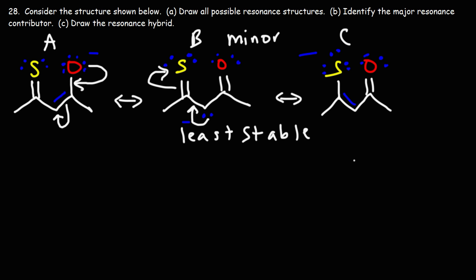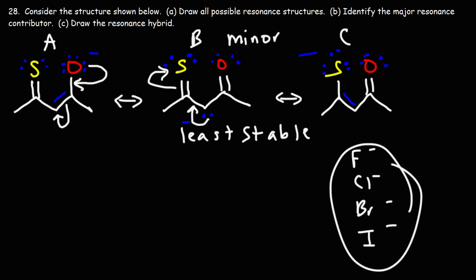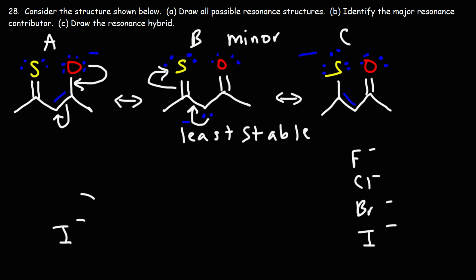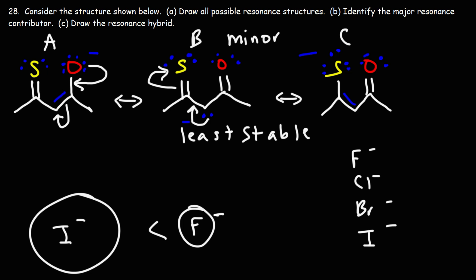Think of the halogens: fluoride, chloride, bromide, iodide. Iodide is the weakest base in this group, for one reason — it's very big relative to fluoride. So fluoride is smaller, it's less stable, and it's a stronger base than iodide. That negative charge is concentrated in a smaller space, whereas iodide's negative charge is more dispersed over a larger volume.